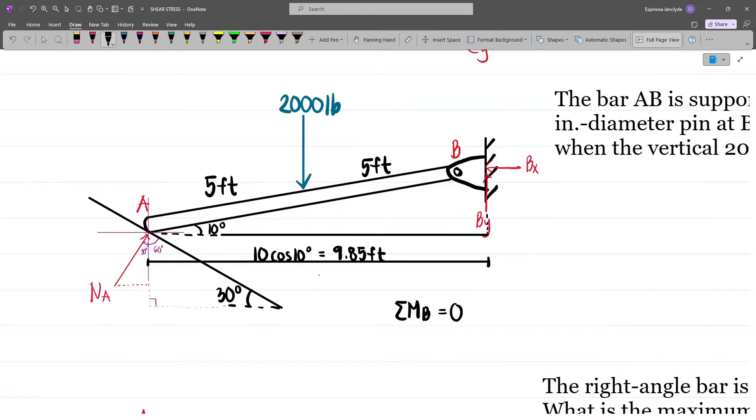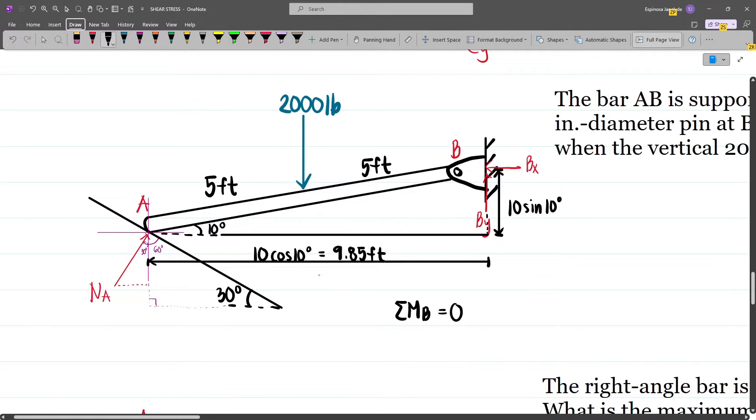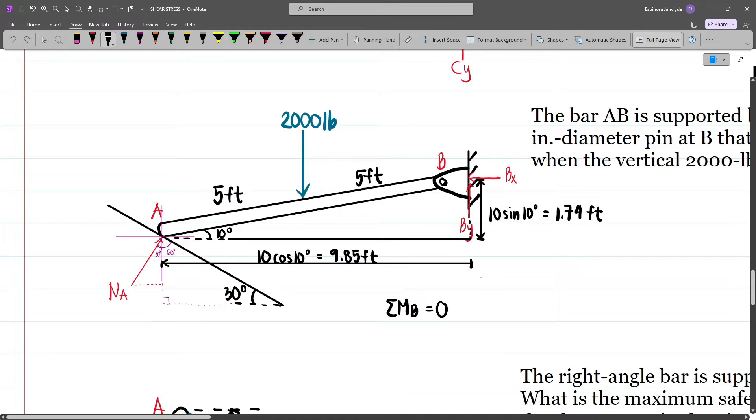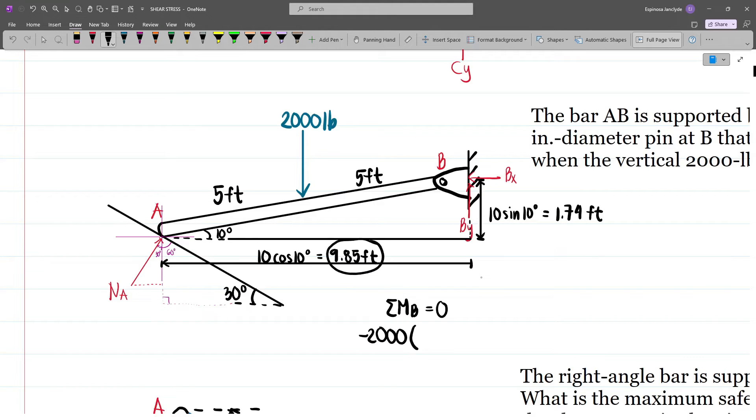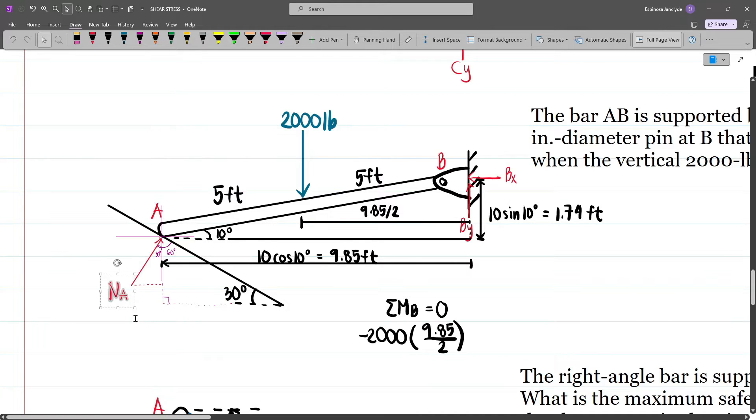And then our vertical distance is 10 times sine of 10 degrees which is approximately 1.74. Now, taking moments about B, I have minus 2000 because that will cause a counterclockwise rotation times half of 9.85 which is the moment arm. This is 9.85 divided by 2. And then let's resolve Na into components.